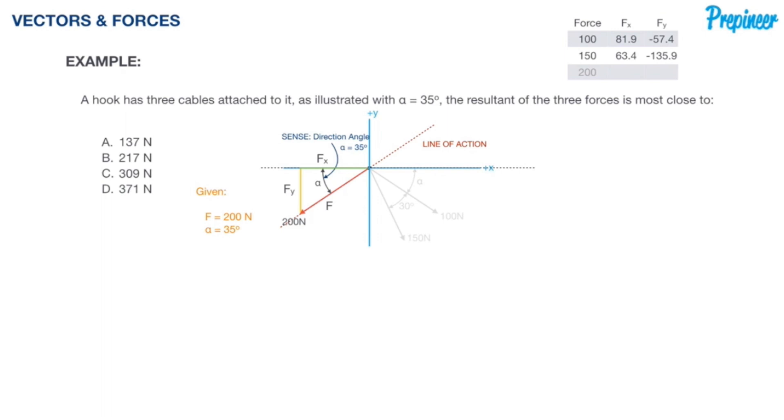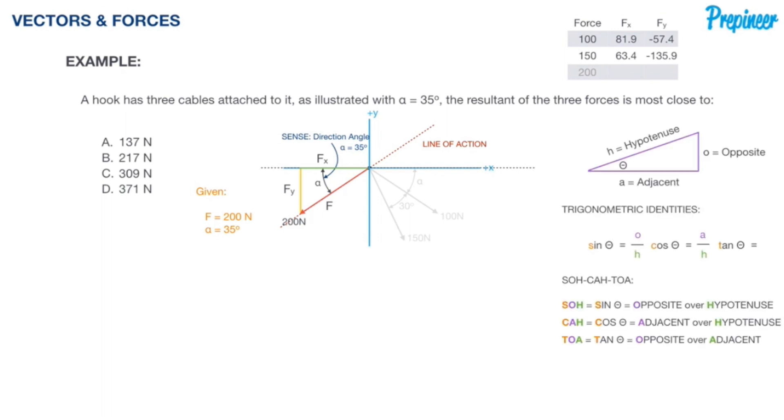We know to use our trig identities to help us solve for our components. The two identities we are interested in are sine and cosine. With the x component opposite to our angle and the y component adjacent to our angle, our formulas will be cosine of alpha equals f sub x divided by f, our y component will be sine of alpha equals f sub y divided by f.